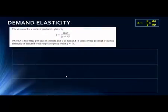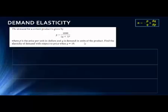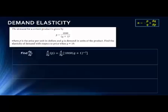Let's look at a more complicated problem where we're going to have to use implicit differentiation. We have the demand for a certain product where price equals a function of Q. The price is in dollars per unit and Q is demand in units. We need to find the elasticity of demand with respect to price when Q equals 19. We already have Q; we need to find P by plugging 19 into the equation, and we need the derivative of Q with respect to P.